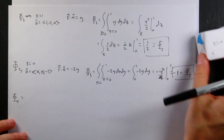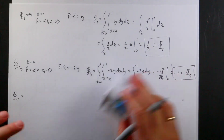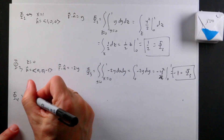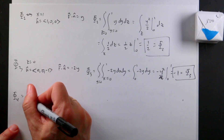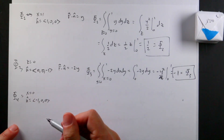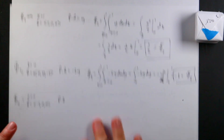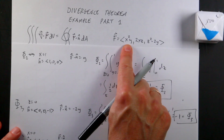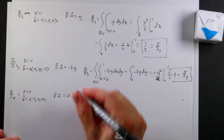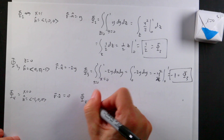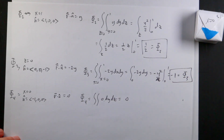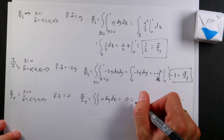Phi four is the X equals zero surface. N-hat equals (−1, 0, 0). Looking at the function, F dot N-hat picks the X component of F but with X equals zero, so F dot N-hat is zero. That means phi four is the double integral of zero dy dz, which is zero. That one's easy.